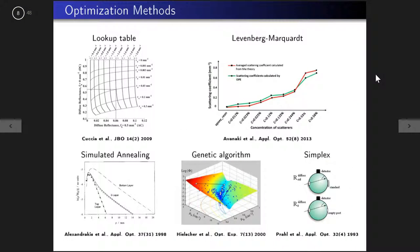I'll briefly review a few different types of optimization methods found in the literature for optical property determination. David used a lookup table methodology. Levenberg-Marquardt is a prevalent gradient-based optimization method. Simulated annealing was used by Elisic Dracus for layered tissue. A genetic algorithm was used by Hilscher to determine mu_A and mu_S'. The simplex method was used in the integrating sphere exercise yesterday.